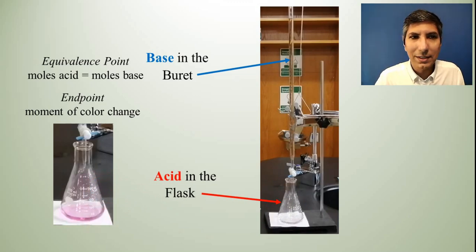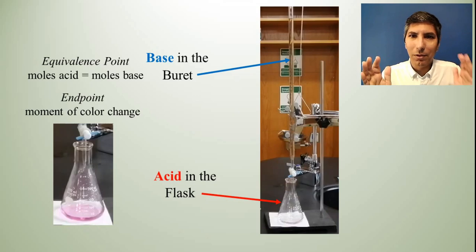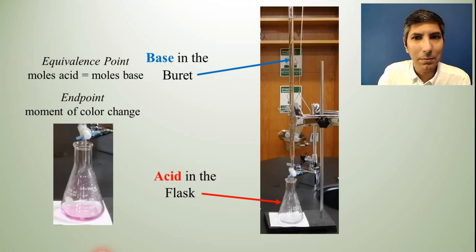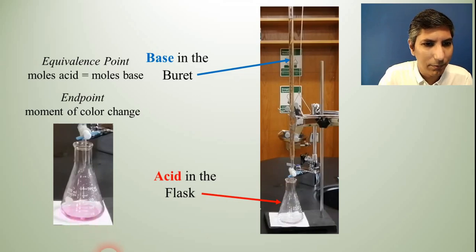Now the moment at which the moles of acid equal the moles of base, that's your equivalence point. Notice we have that here. And the moment when the color changes is called the endpoint. And some students will confuse those two. Know that there is a difference. The equivalence point is a stoichiometric point. The endpoint is what we see with our eyes. And so there is a difference there.